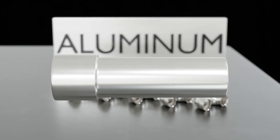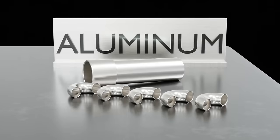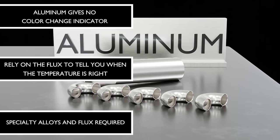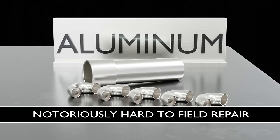And finally, we have aluminum. It's rare that techs will work on aluminum in the field, but it's becoming more common. It has a much lower melting temperature and gives you no visual color indication of target temperature. Generally speaking, you rely on the flux to tell you when the temperature is right. Special alloys and flux are required. You will not use the same alloys and flux that you used for copper, brass, or steel.